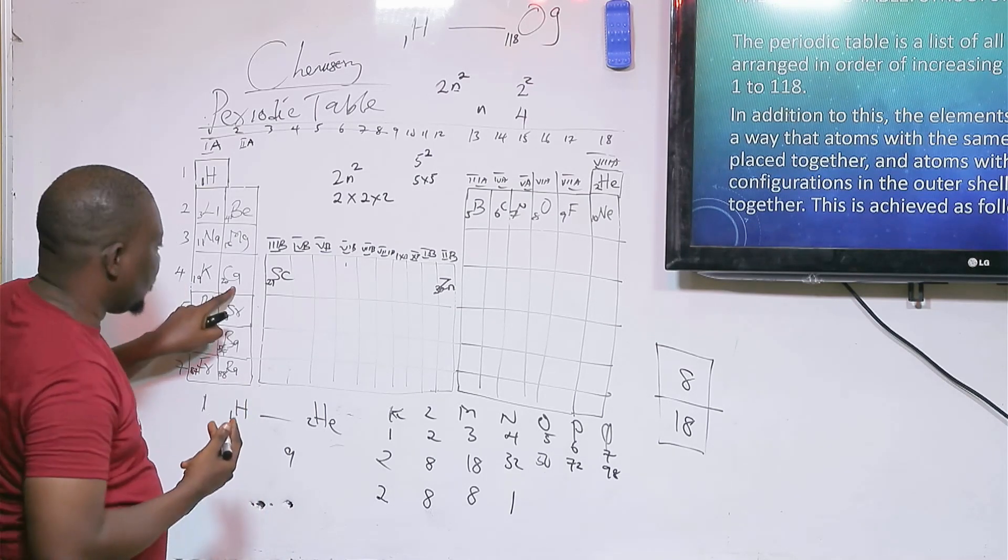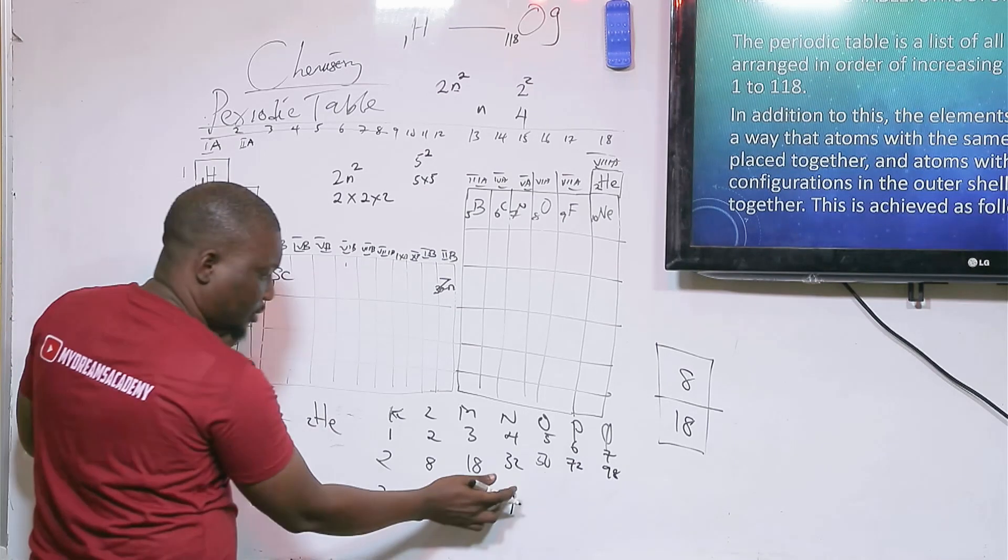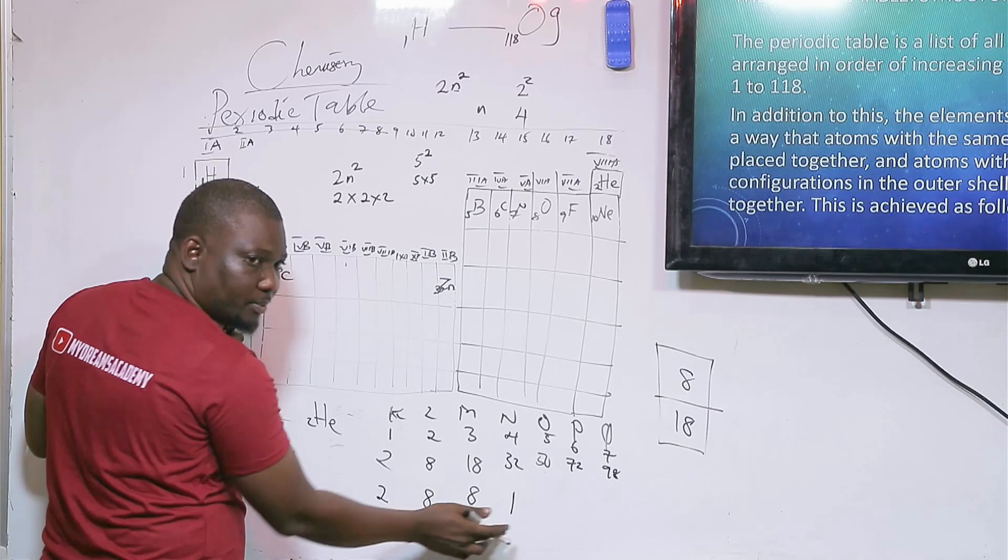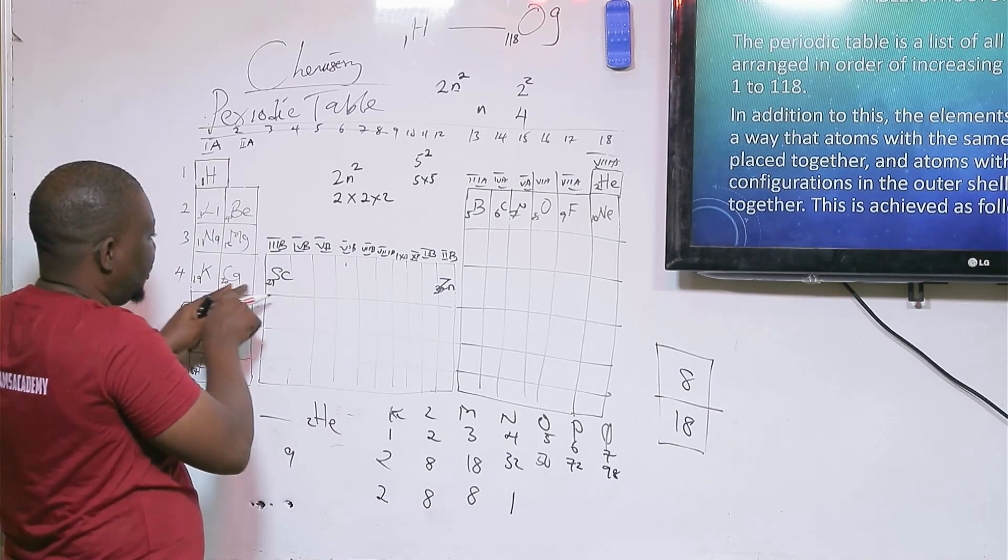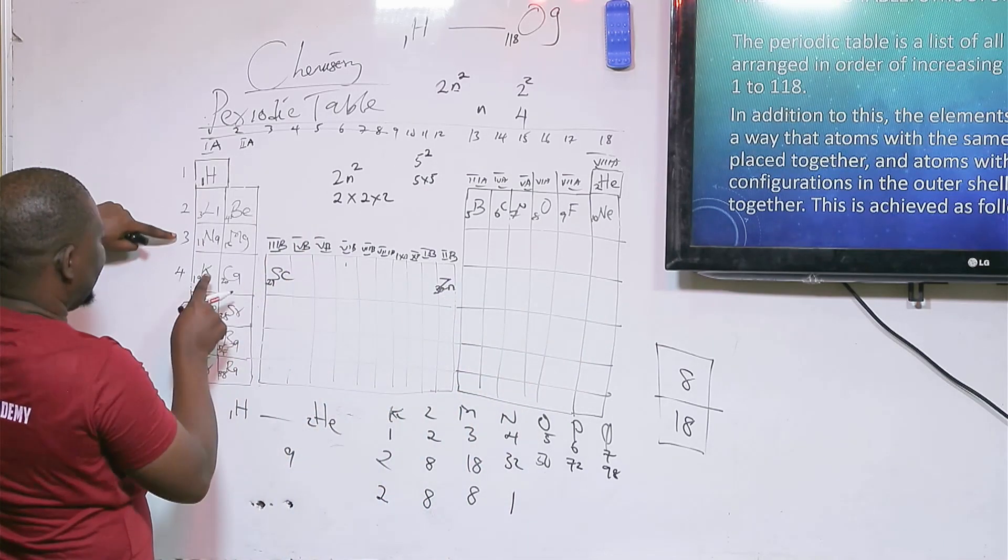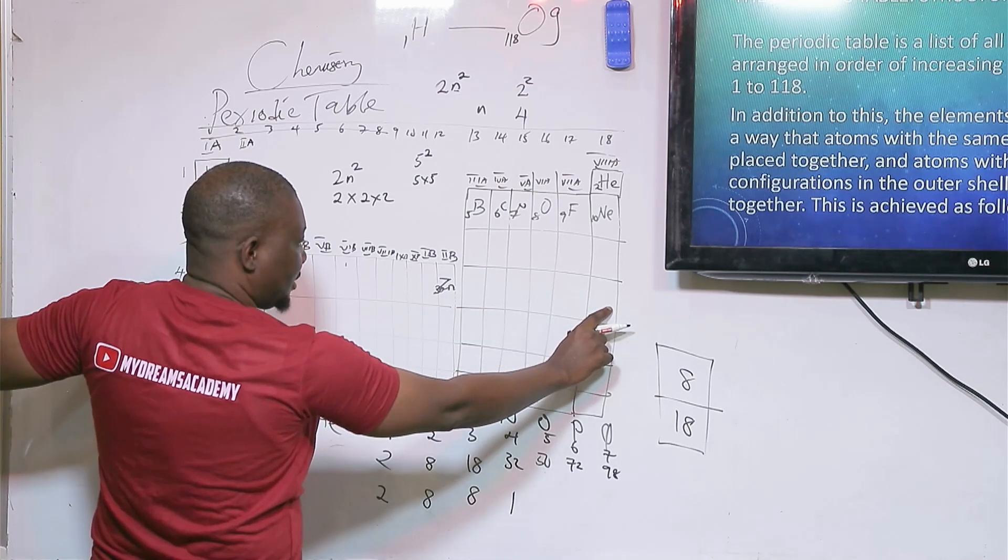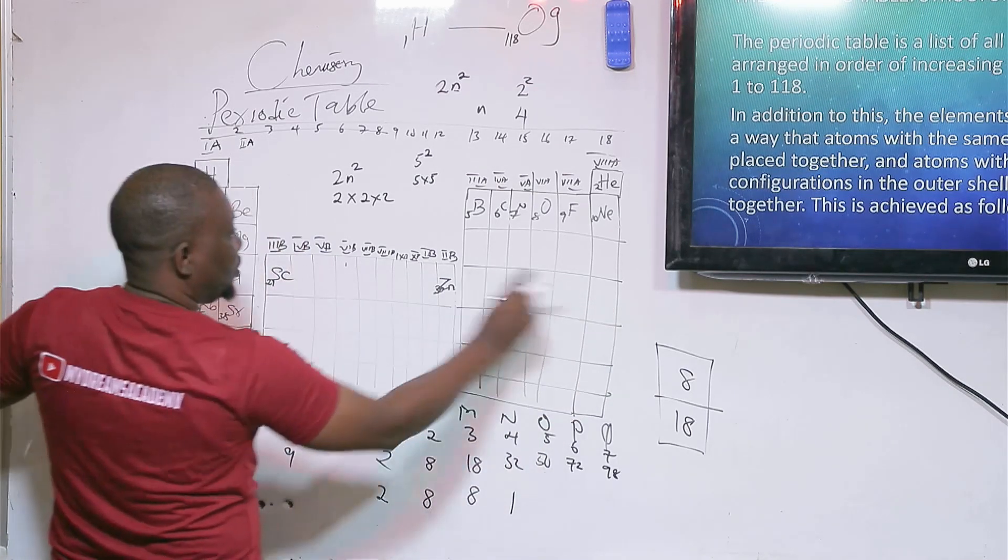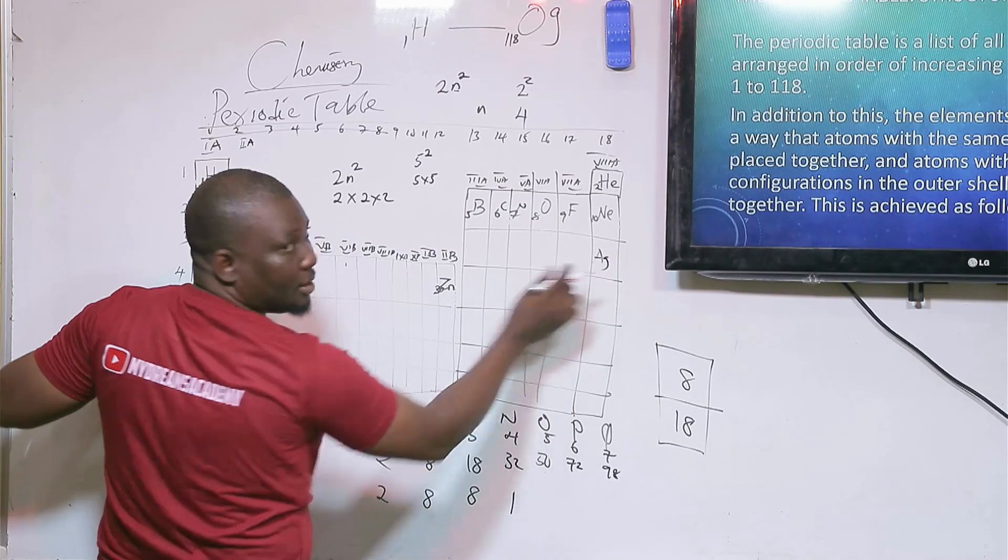The same thing goes with calcium. Calcium is 20. The only difference is to add one more to it, so the last shell will be 2. All the elements in this period, from here to here, will have the same shell structure.